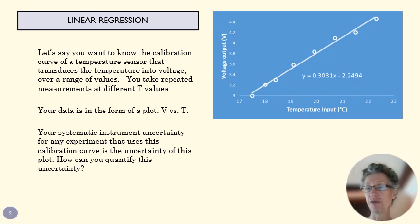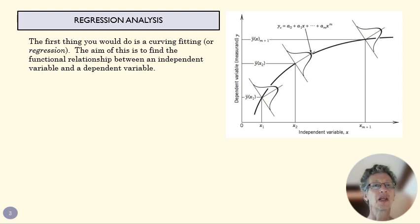The uncertainty in your curve fit, in other words, how far your data points are from that line is going to tell you something about your systematic uncertainty. But we want to know what that uncertainty is. We need to know how good is that data? How closely does it match that fitted curve?